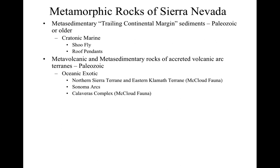The McLeod fauna is really distinctive — a series of fusillinids, which are single-celled amoeba-like protozoans that live in the ocean. They make a shell out of calcium carbonate, so you find them in limestone. There are also distinctive corals and brachiopods that are different from other fossils found in North America or elsewhere in the Pacific — typical of Northern California, Oregon, Washington, and Alaska.